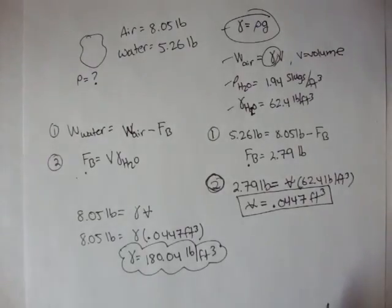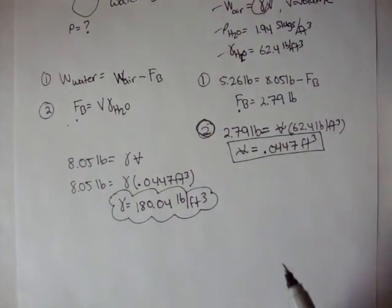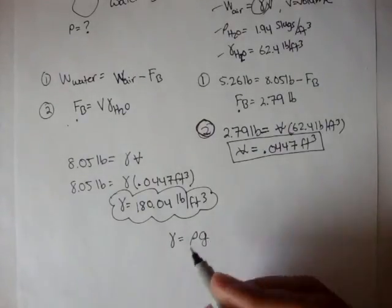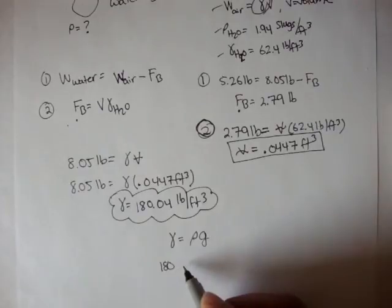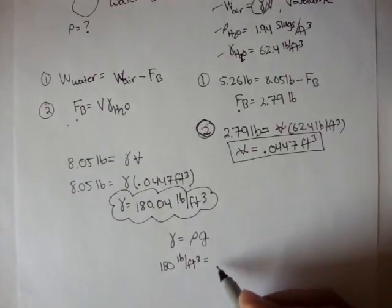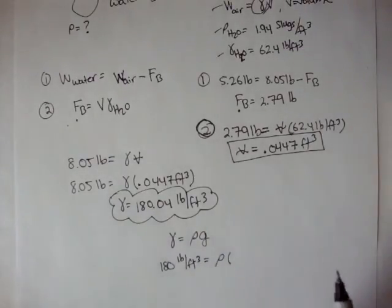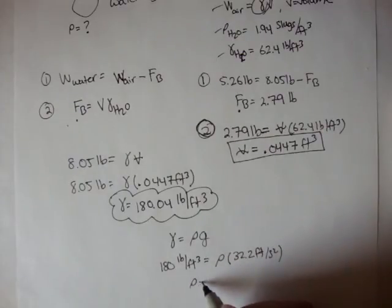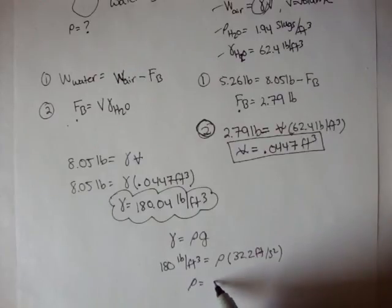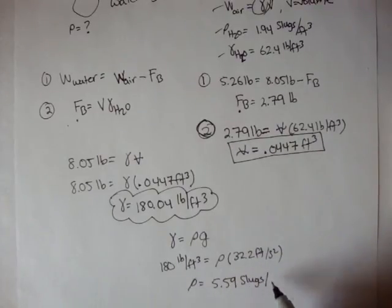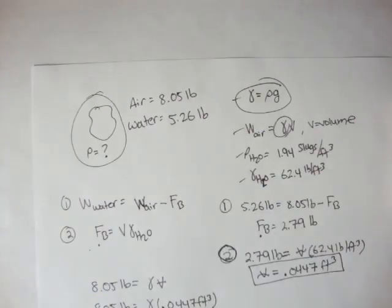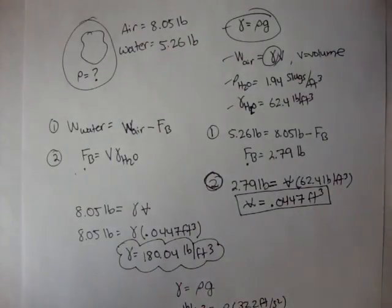Now we can use the formula: specific weight equals density times gravity. The specific weight is 180.04 pounds per foot cubed, equal to rho times gravity. Using U.S. customary units, gravity is 32.2 feet per second squared. Solving for rho, we get the density equals approximately 5.59 slugs per foot cubed. That's the density of this body of mass, and we used our concepts of buoyant force to solve for it.